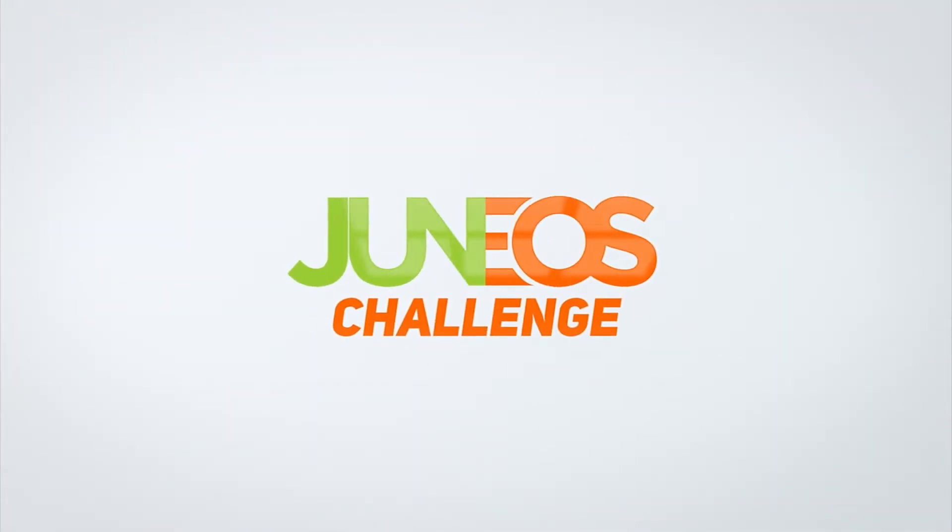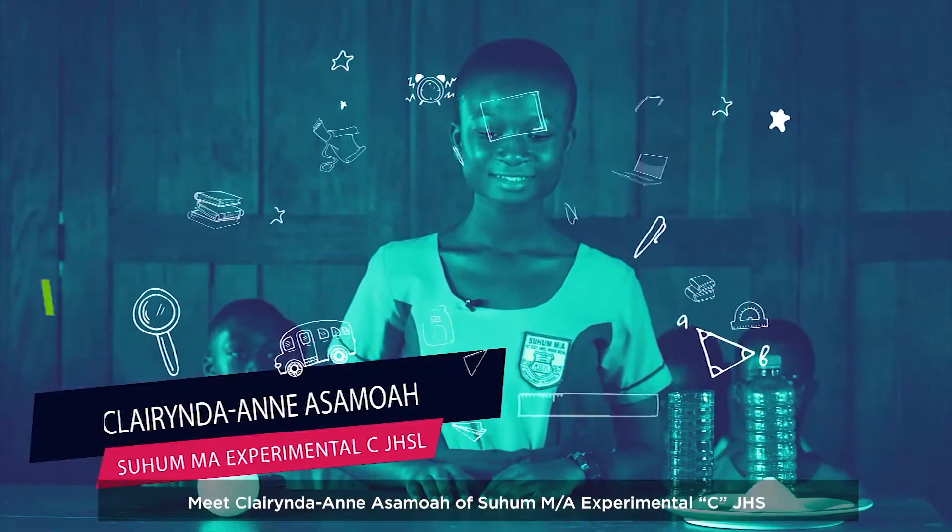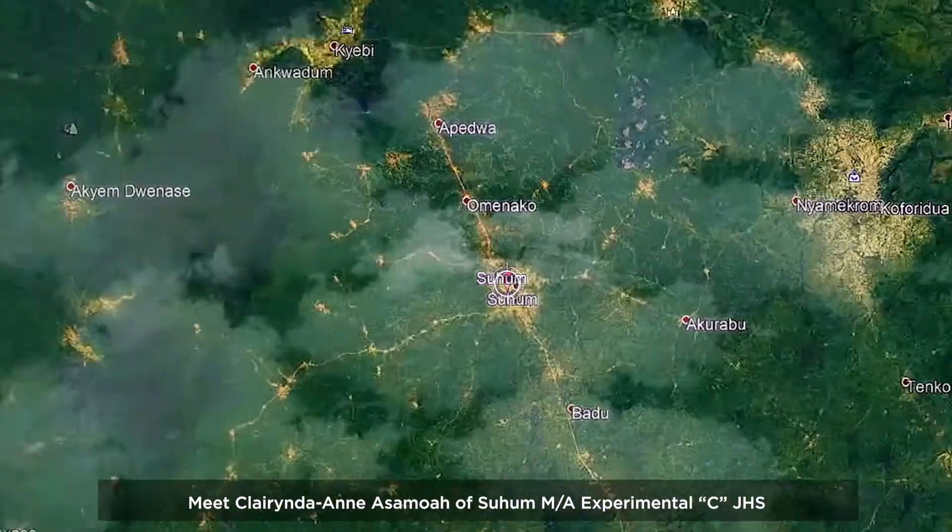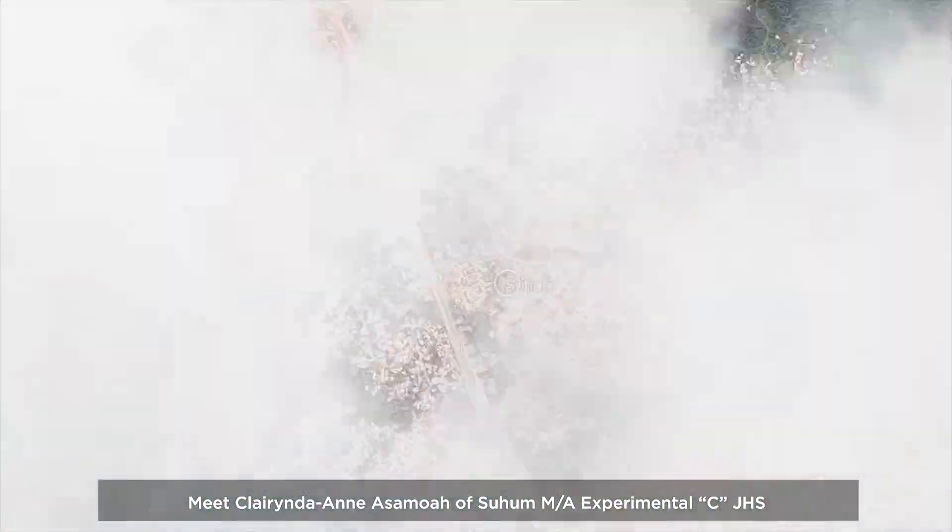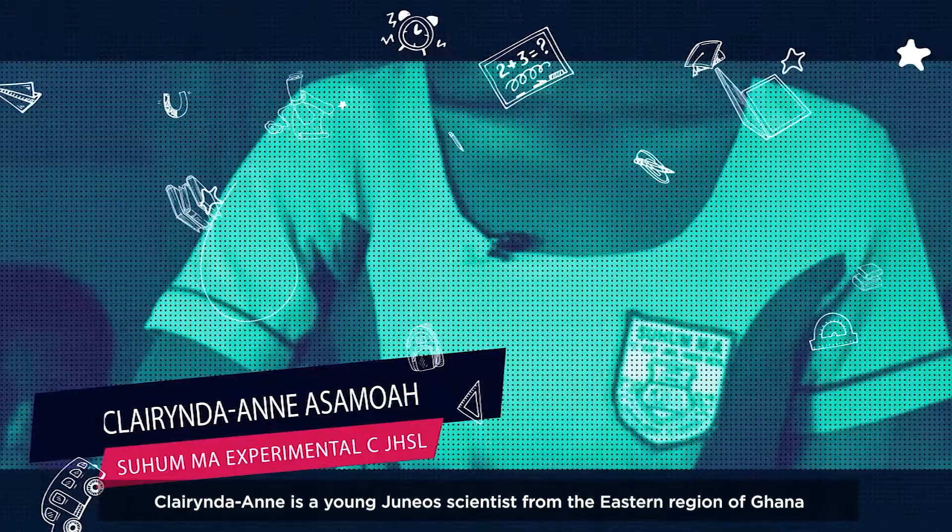GH for STEM Juniors Challenge. Meet Clarinda Anne Asamoah from Suhum MA Experimental C JHS. Clarinda Anne is a young junior scientist from the Eastern Region of Ghana.